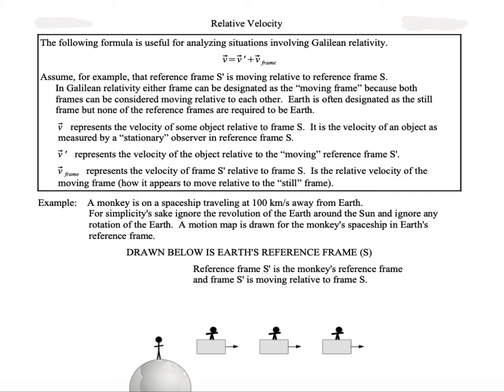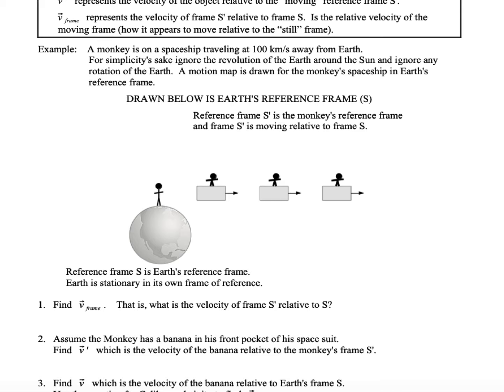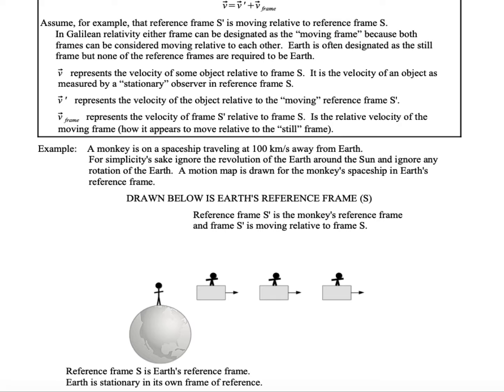All right, so just to give an example, imagine that you're standing on Earth, and then there's a monkey who's in a spaceship who's moving away from you. And just for simplicity's sake, we're going to ignore the revolution and rotation of the Earth. Just assume that it's stationary for now. And it looks like the monkey is traveling at 100 kilometers per second away from Earth. So we want to draw the two reference frames that are involved here, because we have two different observers.